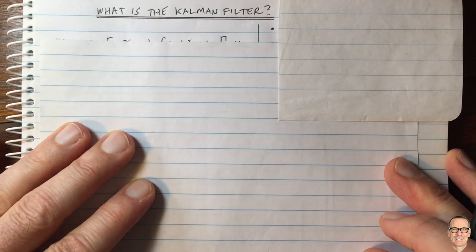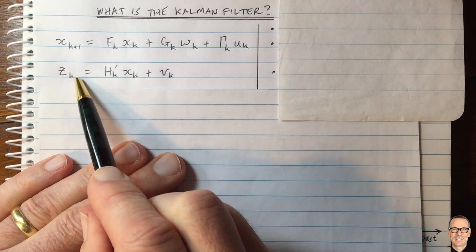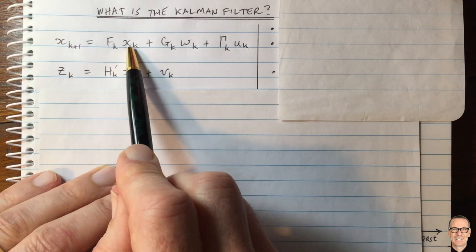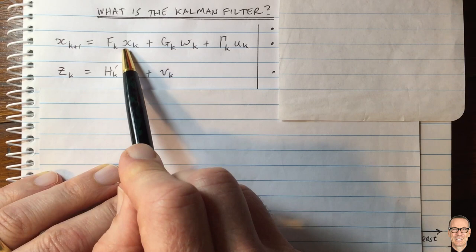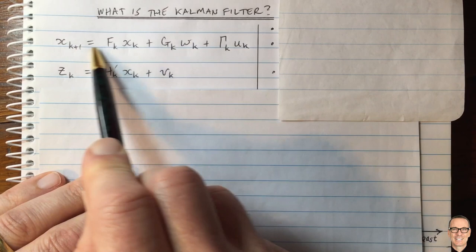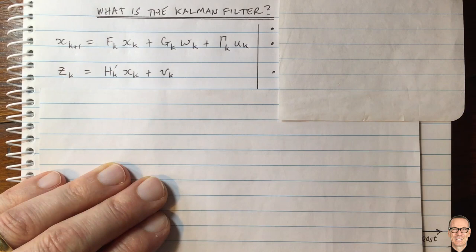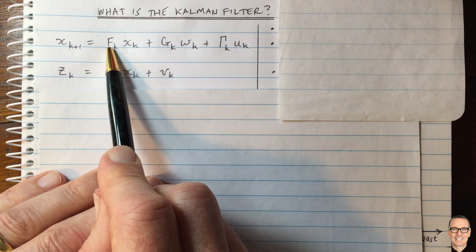Let's look at this set of equations here for a linear discrete time system. We have the state vector X, which represents the state of the system. This equation tells us how that state goes from time K to time K plus one. It's a linear set of equations, so this state gets multiplied by a matrix — the update matrix.